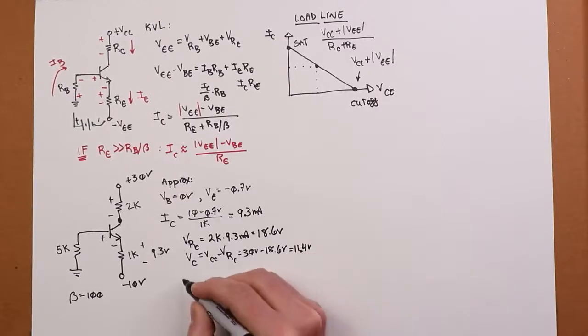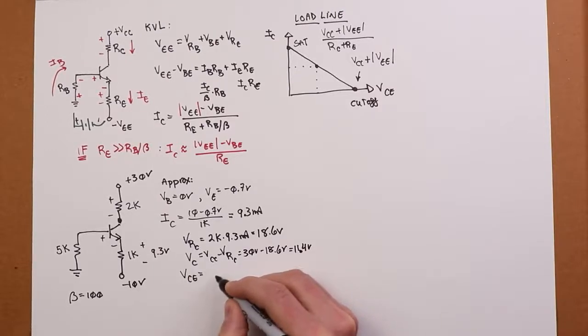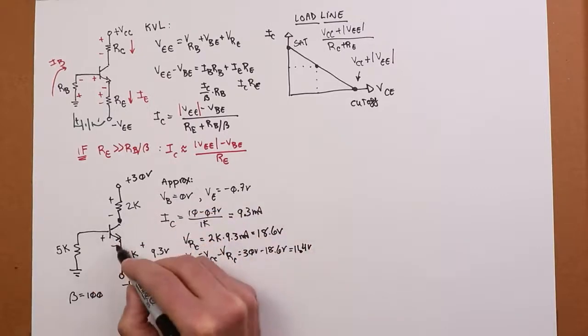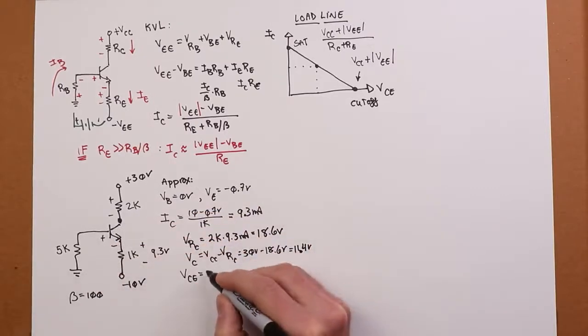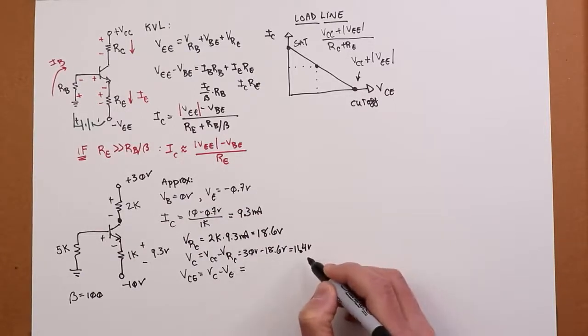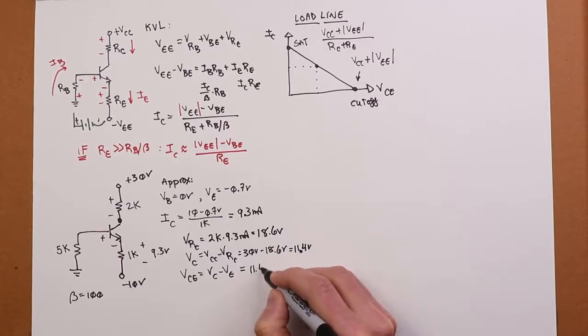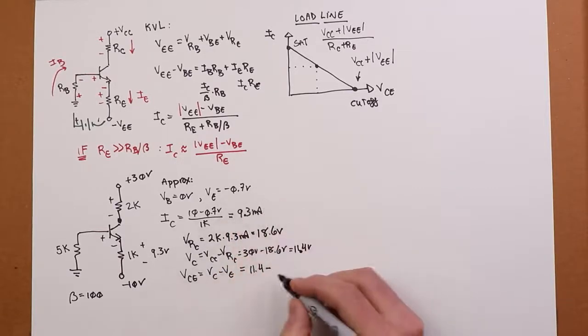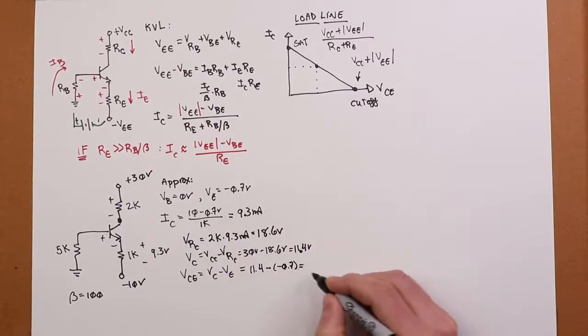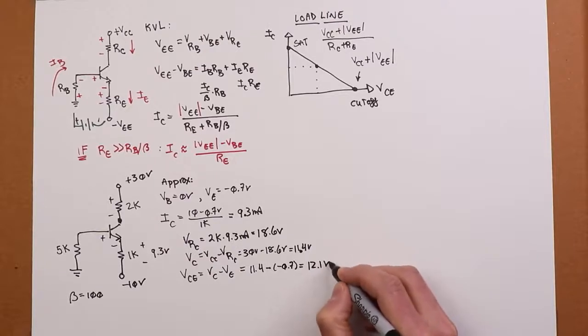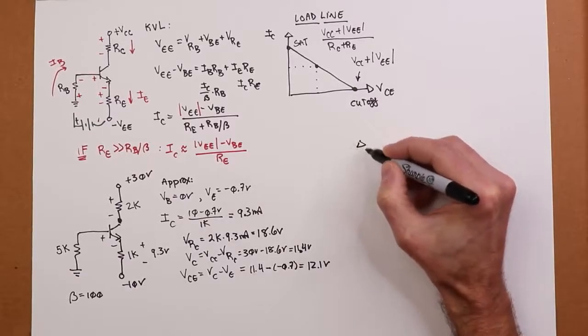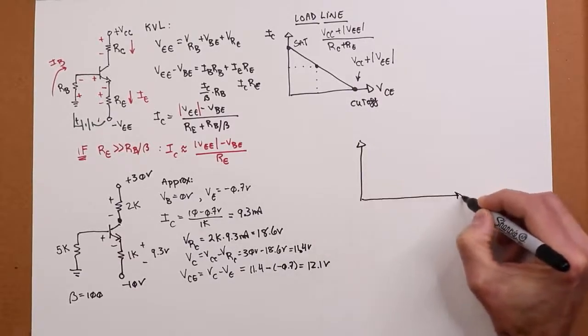Now what's your VCE? Well, by definition, from collector to emitter is the collector voltage minus the emitter voltage. VCE must equal VC minus VE. So that's the 11.4 we just found minus VE, which is a negative 0.7, or 12.1 volts. So our load line winds up looking like this.